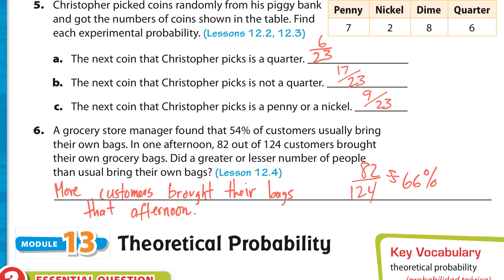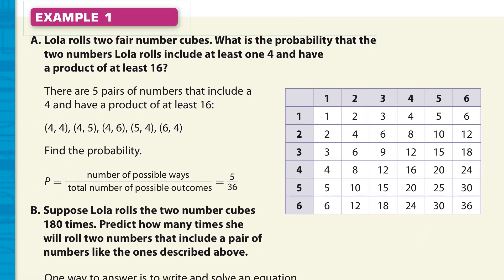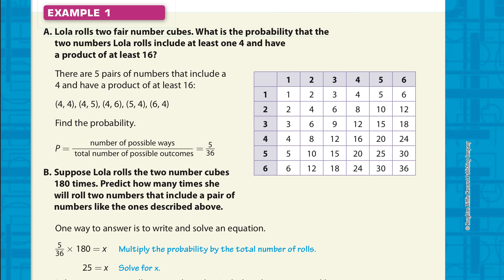So, we go from the experimental probability to the theoretical probability. And, I'm not going to labor this example too much. But, I will explain it briefly. So, she rolls two fair number cubes, two dice. What's the probability? The two numbers that Lola rolls include at least one 4 and have a product of at least 16.